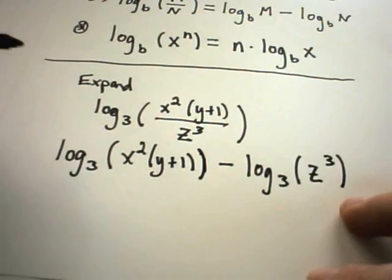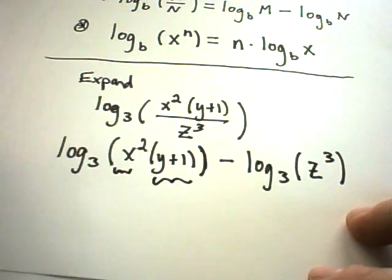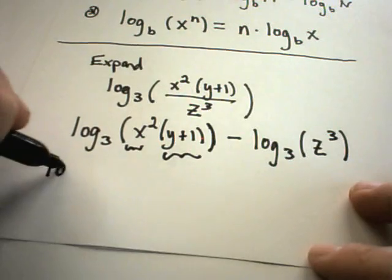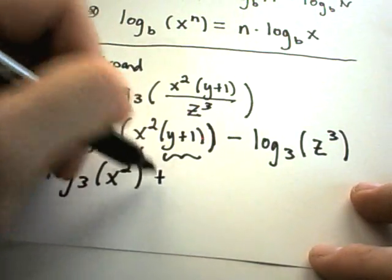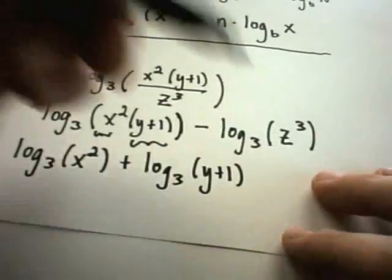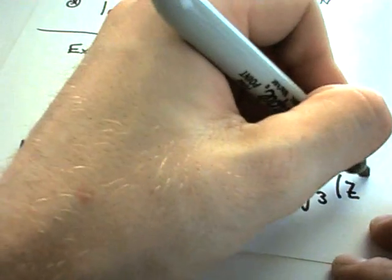Alright? And, my next step now is to recognize I've got a product on my first term. So, again, I can break this up as addition. So, I'll have log base 3 of x squared plus log base 3 of y plus 1. And, again, my minus log base 3 of z squared, excuse me, z cubed is just hanging out.